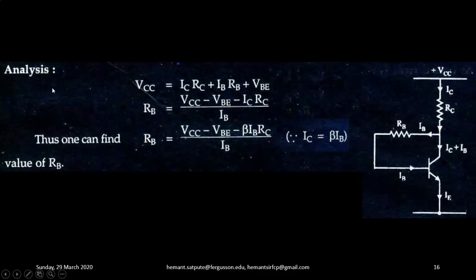Let us do the analysis. Applying Kirchhoff's voltage law to the input side of the circuit. Input side means from VCC, you begin. Current will flow through RC, then it will take a diversion to RB, then it will go to the base emitter junction and then ground. So this is the input path. Some part of collector current will flow through RB as IB.